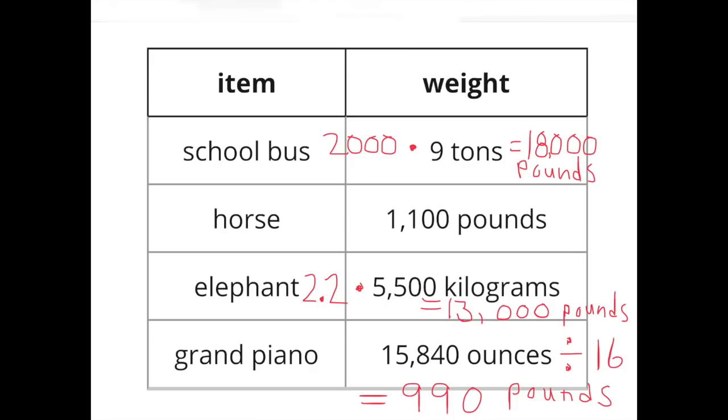Let's turn everything into pounds. A school bus, 9 tons. So turn it into pounds by multiplying it by 2,000. A school bus weighs 18,000 pounds. Horse, 1,100 pounds. It's already in pounds, there's no math to do.